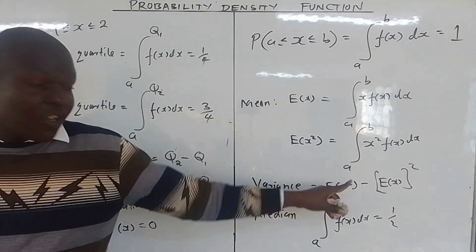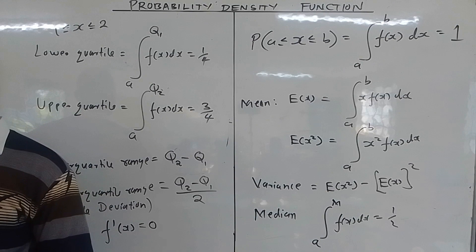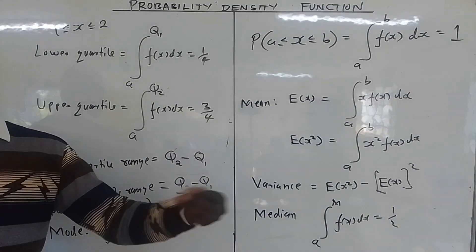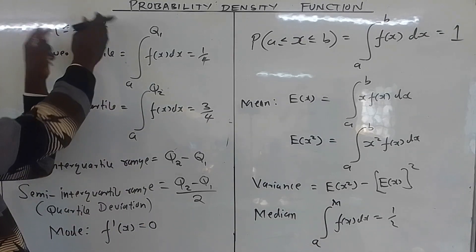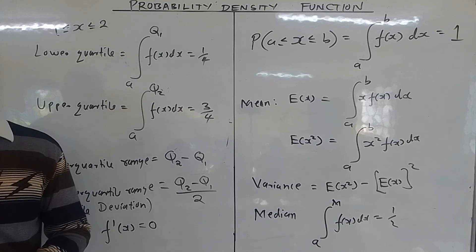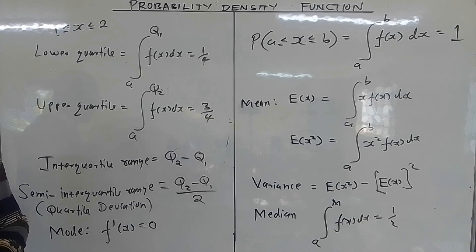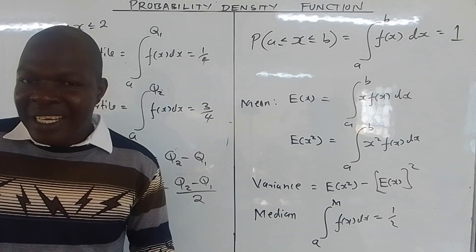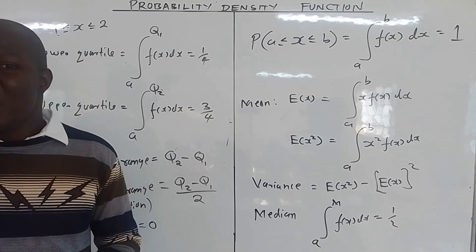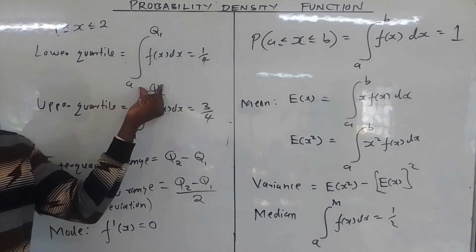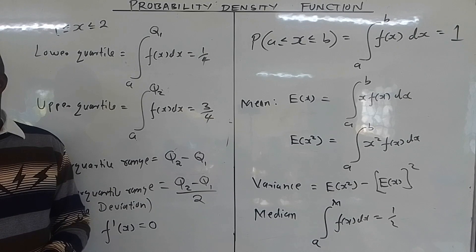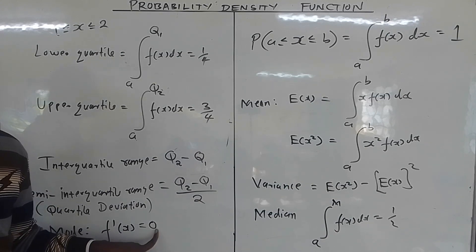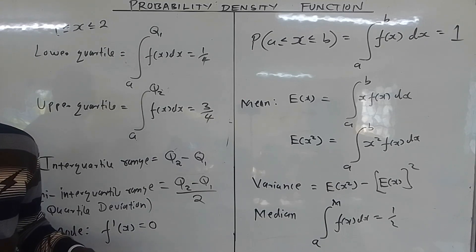The measures of dispersion like variance define spread, but the measures of location — mean, mode, quartiles — must be within the x range. For percentiles, if you are looking for the tenth percentile you integrate from a to that percentile value and get 10 over 100. So when you differentiate the probability density function and equate to zero, the value of x you get at that turning point — the maximum — gives you the mode.